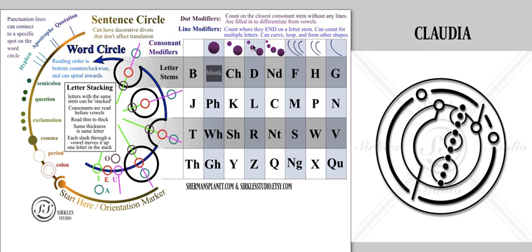which uses a combination of dot modifiers like all these guys here, and lines like these here, although these are attached to vowels, the I and the U, and vowels are smaller circles.